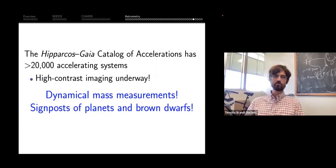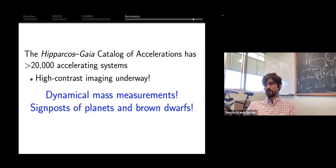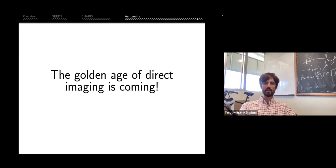I want to wrap up there. We have over 20,000, maybe even 30,000 accelerating systems today. Most of them are stellar binaries, but there's a treasure trove in there of planets, brown dwarfs, maybe even black holes. Based on that, my hope is that the golden age of direct imaging is finally on its way. Thank you very much, and I'll be happy for questions.